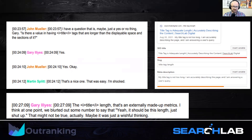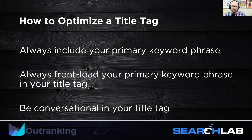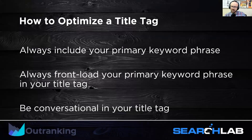So how do you optimize the title tag? You should always include your primary keyword phrase — the most important term you want to rank for, like 'personal injury lawyer.' You always want to front-load that primary keyword phrase. Why? Because people read left to right in the West, and Google tends to prioritize content presented left to right, top down. So you want that primary keyword phrase first.